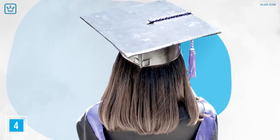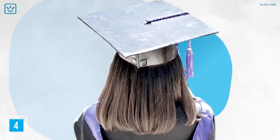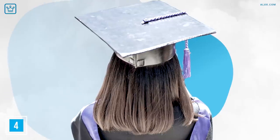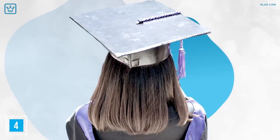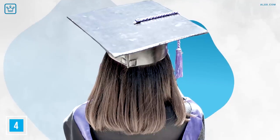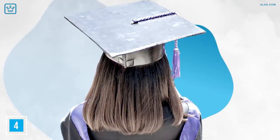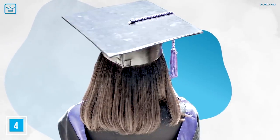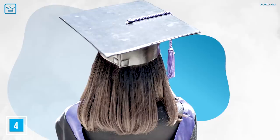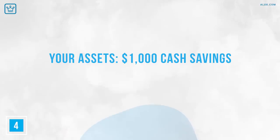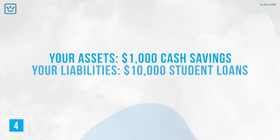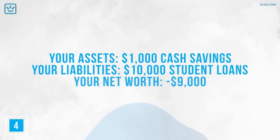Example A: You're a new graduate with $1,000 in your savings account, $10,000 in student loan debt, and a part-time job that pays just enough to cover your monthly bills. You're looking for a full-time gig so you can get on your feet. Your student loan has an APR of 4.65%. Your assets: $1,000 cash savings. Your liabilities: $10,000 in student loans. Your net worth: negative $9,000.